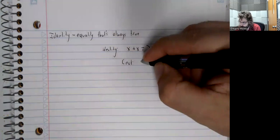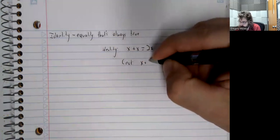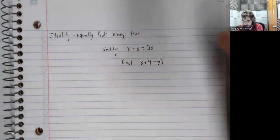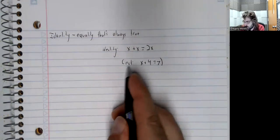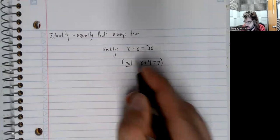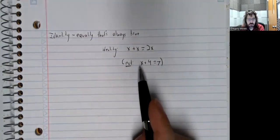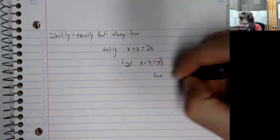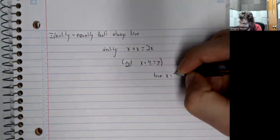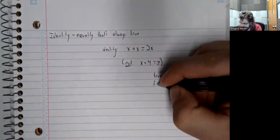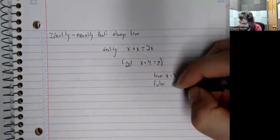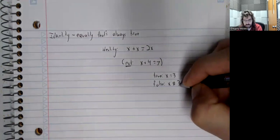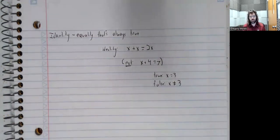Compare it to something like x plus 4 equals 7. This is not an identity, because it can be true or false. It's true when x equals 3, and it's false when x isn't equal to 3.